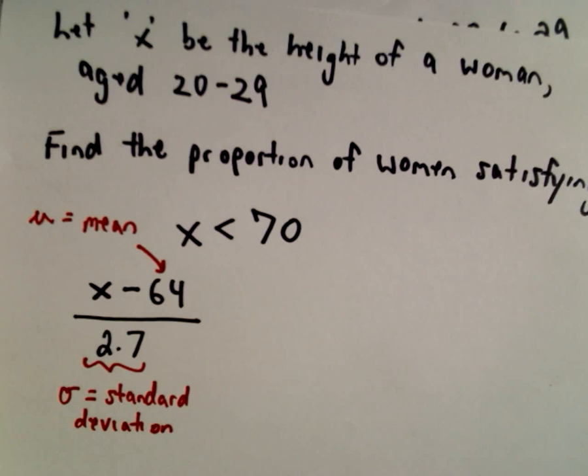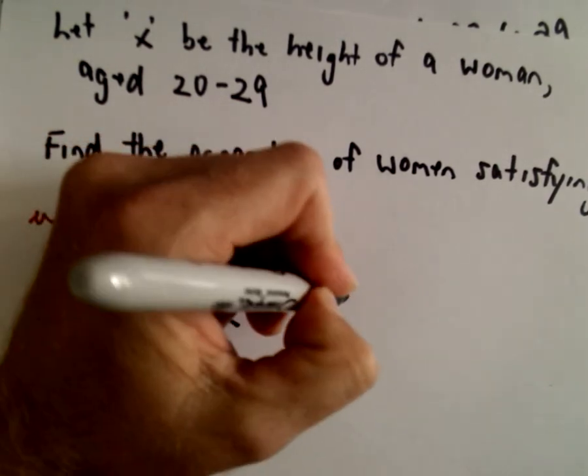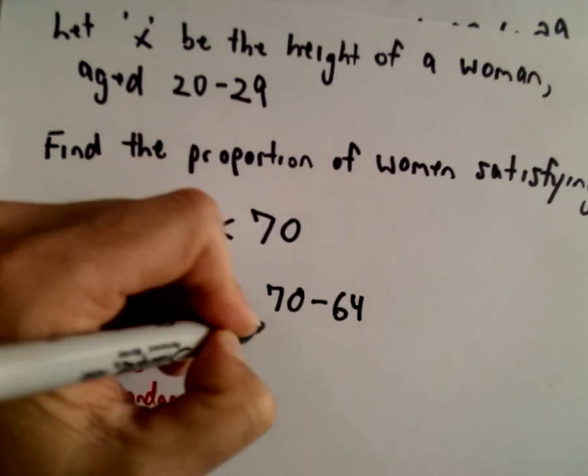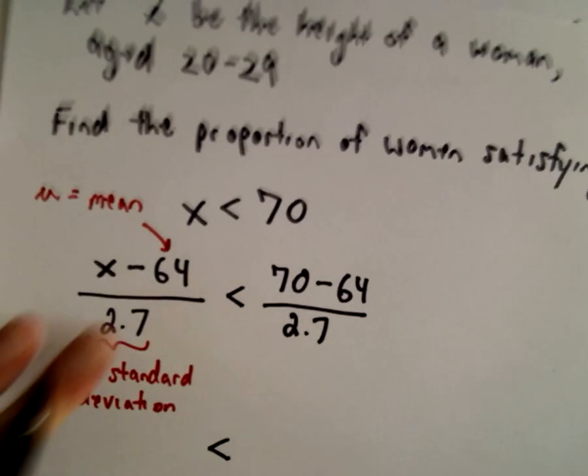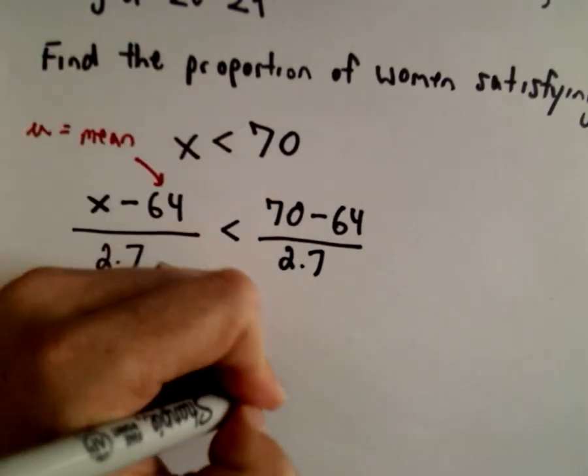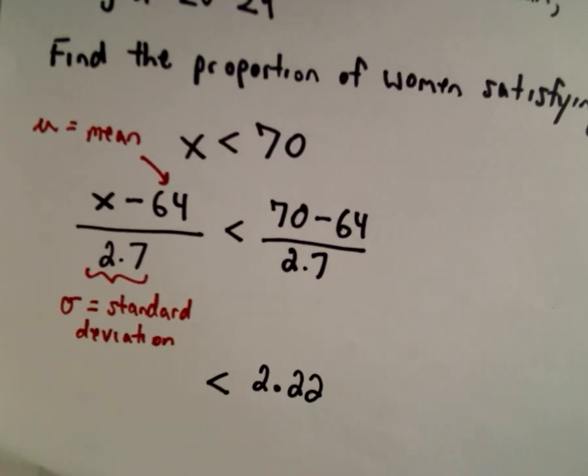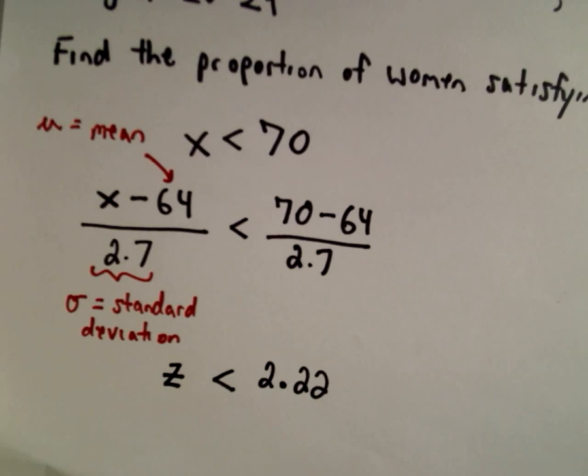I've got to do the same thing to the right side as well. On the left side I subtracted 64 and divided by 2.7, so on the right side I'm going to take 70 minus 64 and also divide by 2.7. If you do the arithmetic on the right side, 70 minus 64 divided by 2.7, I'm getting that to be 2.22. On the left side now, since I've standardized that, I'm simply going to write that as z. Now I'm just going to read off this value from my table.